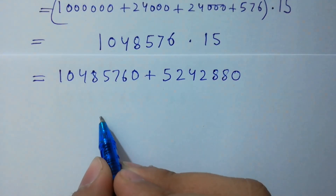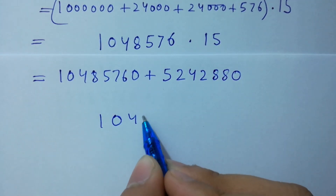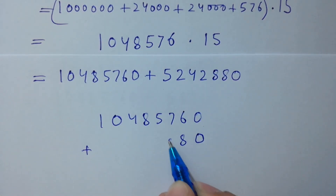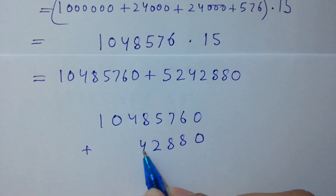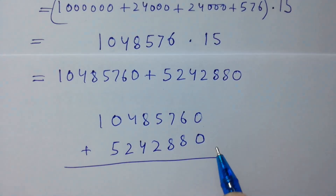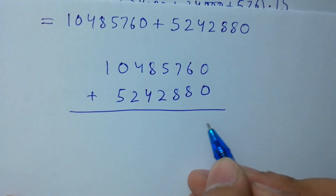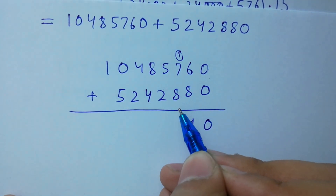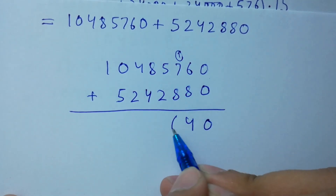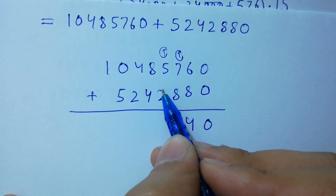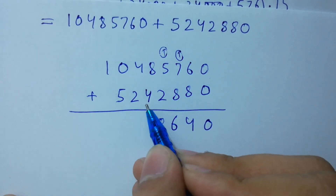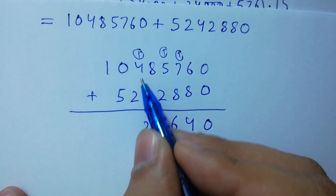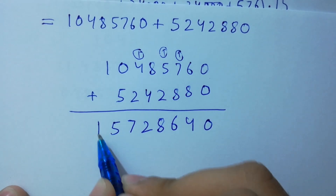Next step, I am going to add 10,485,760 and 5,242,880. Adding digit by digit: 0 plus 0 is 0; 6 plus 8 is 14, write 4 carry 1; 8 plus 7 plus 1 is 16, write 6 carry 1; 5 plus 2 plus 1 is 8; 8 plus 4 is 12, write 2 carry 1; 4 plus 2 plus 1 is 7; wait — working through all digits gives us 15,728,640.